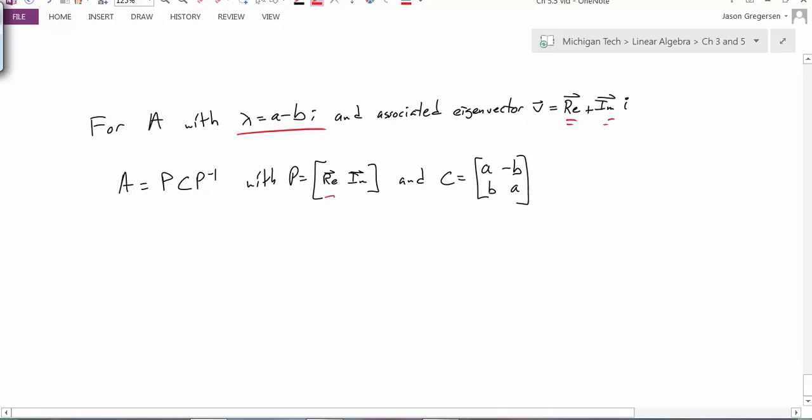we've already seen that my matrix P, that first column should be the real part of the complex eigenvector, and the second column is the imaginary part of the complex eigenvector. But now we can also see that similarity transform tells us that A is similar to this matrix C, which is formed with the real and imaginary parts of the eigenvalue.